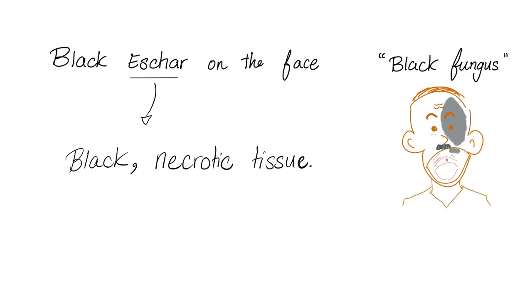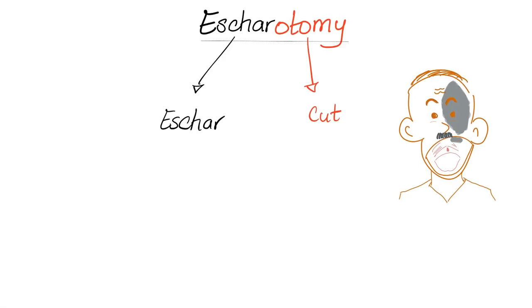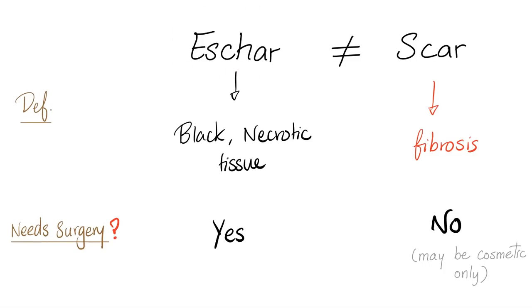What's an eschar? Black necrotic tissue. How do you treat an eschar? Escharotomy - it's a surgical procedure where you remove the eschar, cutting the necrotic tissue out. Be careful: there is a huge difference between eschar and scar. Scar is just fibrosis from healing. Which one requires surgery urgently - otherwise the patient can die? Eschar, of course. A scar does not need surgery, only cosmetically if desired. You can live with a scar; it's not going to kill you.